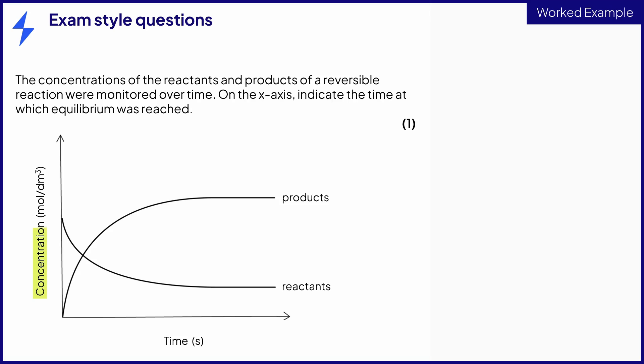The graph is showing you how the concentration of both the reactants and the products change as the reaction progresses. You know that at equilibrium, the concentrations of the reactants and the products remain constant. So you need to find the time where the concentrations do not change. This is the point where the curves become horizontal.